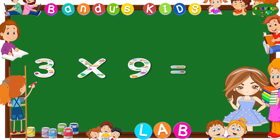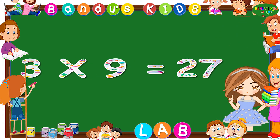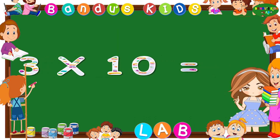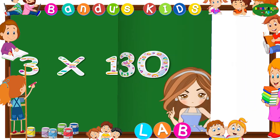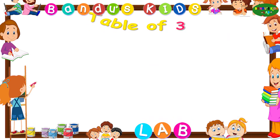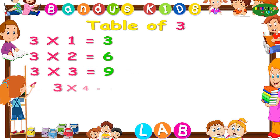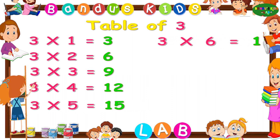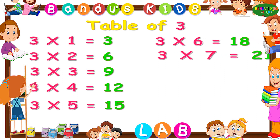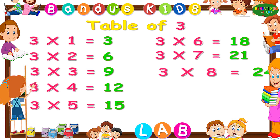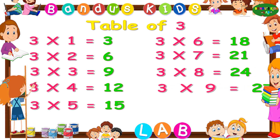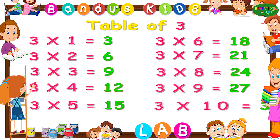Three nines are twenty-seven, three tens are thirty. Now let's revise the table of three one more time by singing: three ones are three, three twos are six, three threes are nine, three fours are twelve, three fives are fifteen, three sixes are eighteen, three sevens are twenty-one, three eights are twenty-four, three nines are twenty-seven, three tens are thirty.